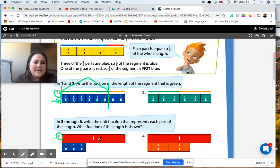For number three, it says write the unit fraction that represents each part of the length. And then, what fraction of the length is shown? So you're going to have two answers for this question. We can see, based on this denominator, that the unit fraction is one-eighth. This whole length is divided into eights.